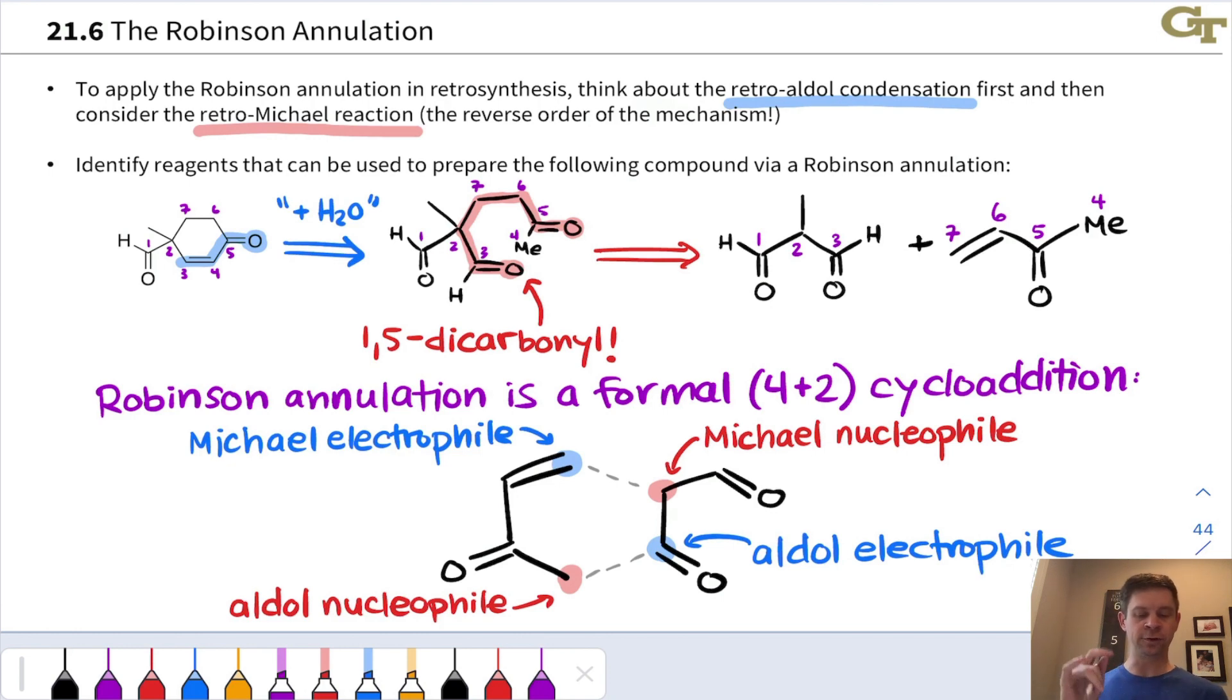So we see how the substrate structures, the reactant structures are sort of complementary. This has positive charge here and ultimately negative charge there, while the other reactant has positive charge here and negative charge there, and these complementary charges enable two bond formations in a single reaction mixture. Really remarkable transformation that leads to a lot of complexity in a single reaction flask from relatively simple acyclic starting materials.